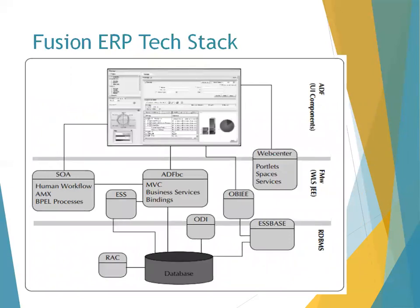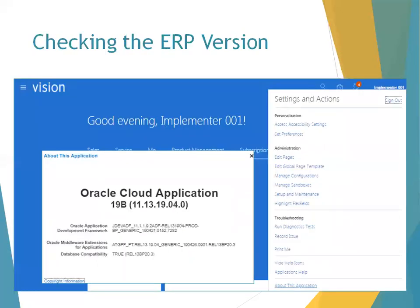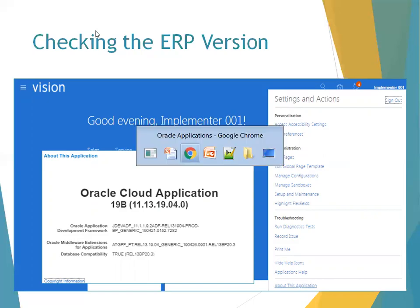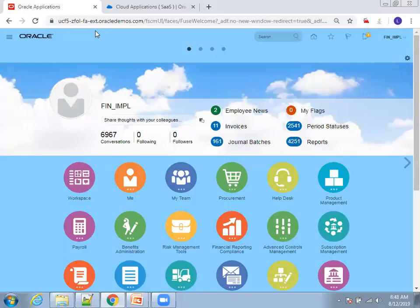The technical stack is a three-tier architecture: the UI layer is ADF, the middleware is Oracle Fusion Middleware, and the database is Oracle DBMS. Oracle releases quarterly updates for your particular Cloud ERP version.